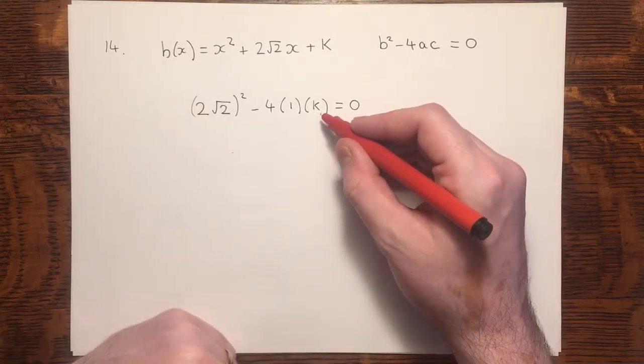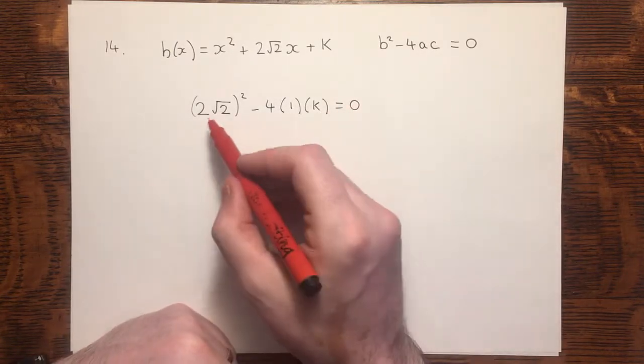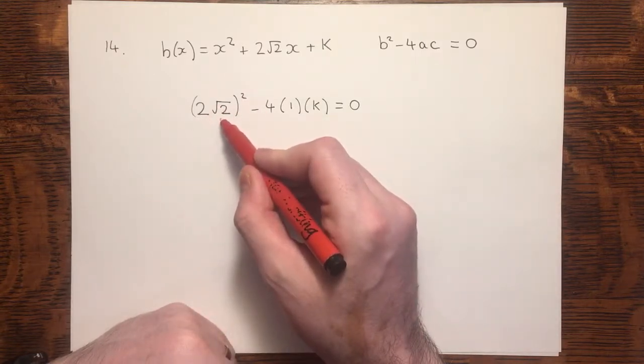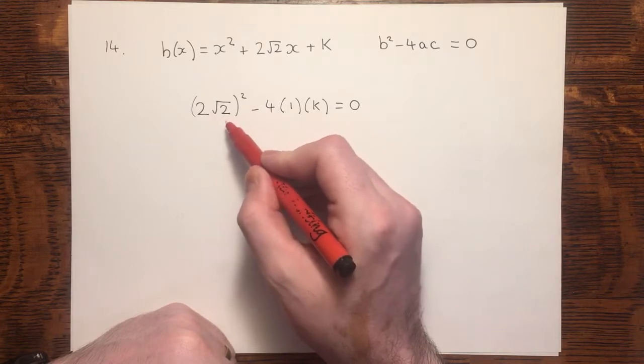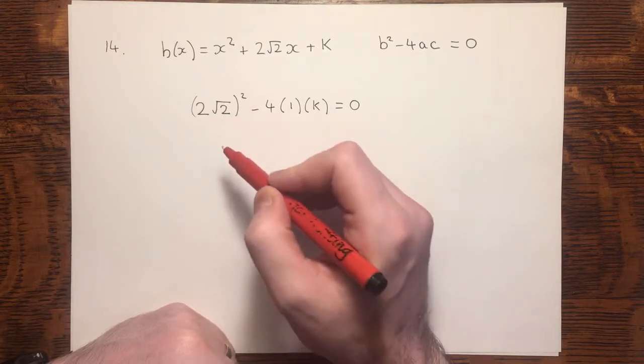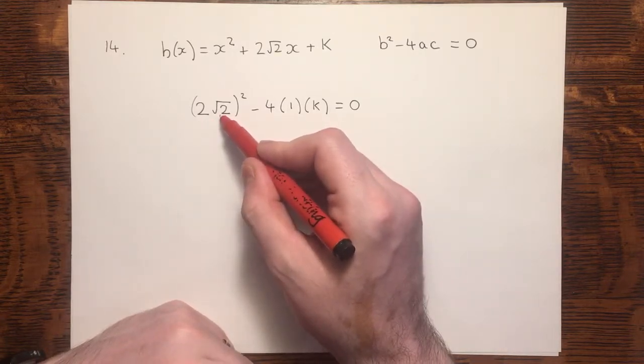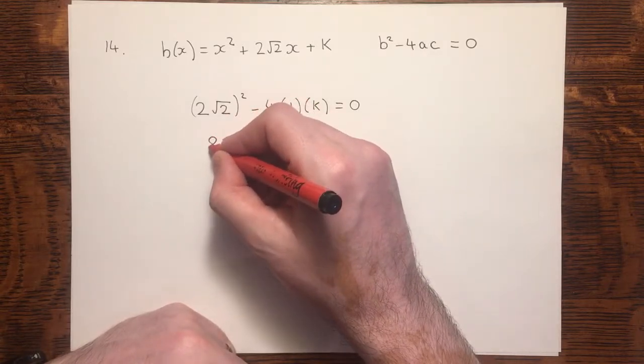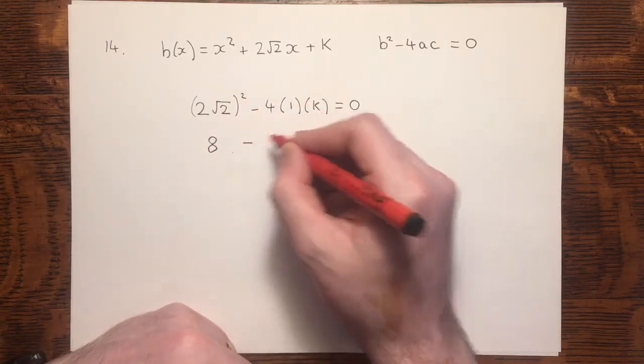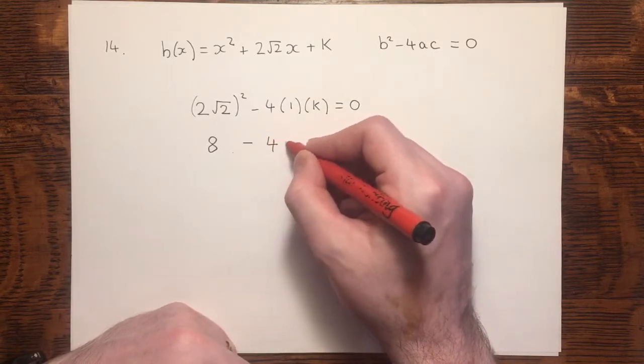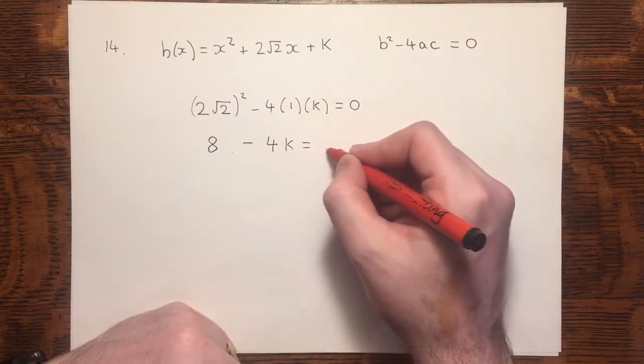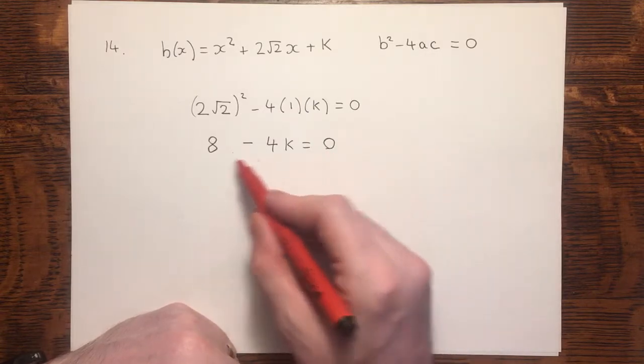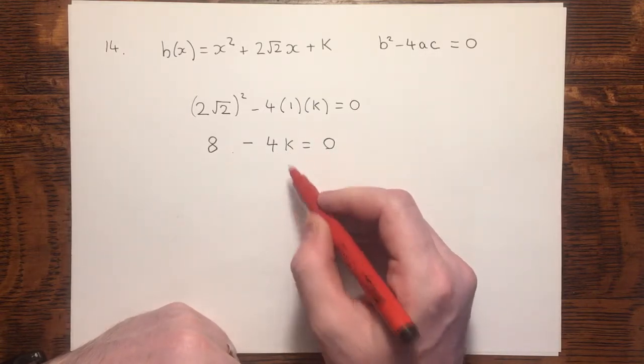We now need to solve for k. 2√2 squared is 2√2 multiplied by 2√2. The 2's would multiply together to give 4, and √2 times √2 is 2. 4 times 2 is 8. Simplifying this gives us 4k, and it should be evident that k equals 2.